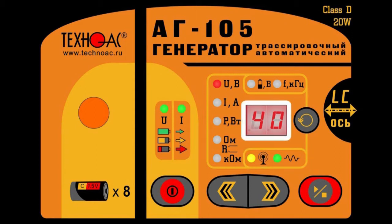The numeric field indicates the following parameters: LC — built-in antenna activated; AN — external antenna activated; CO — continuous signal of transmission; PU — pulse signal of transmission; 2F — simultaneous transmission of two frequencies.